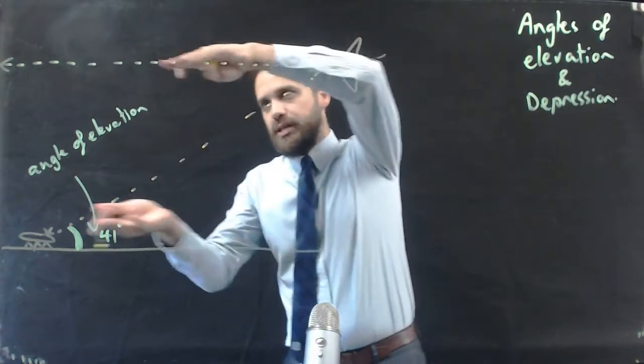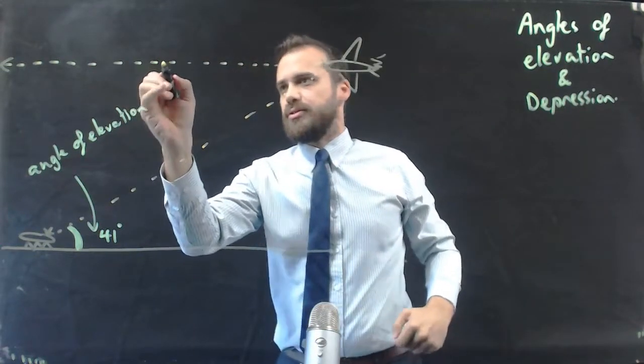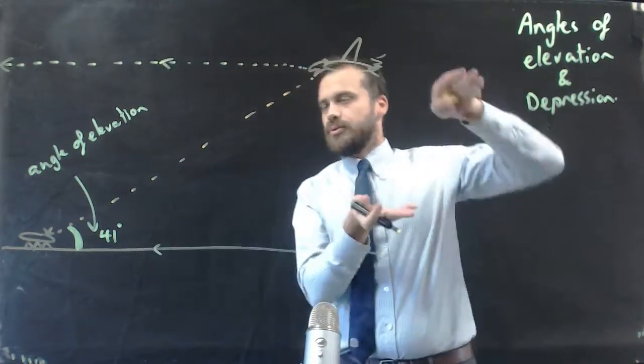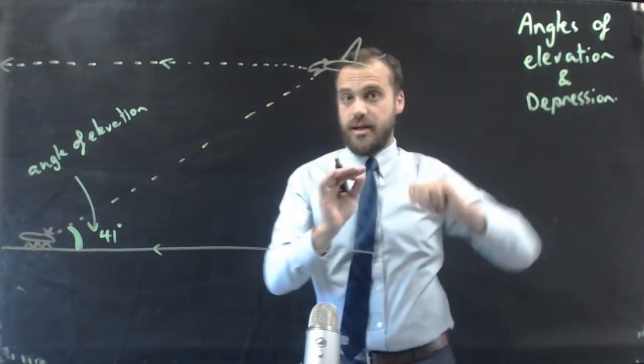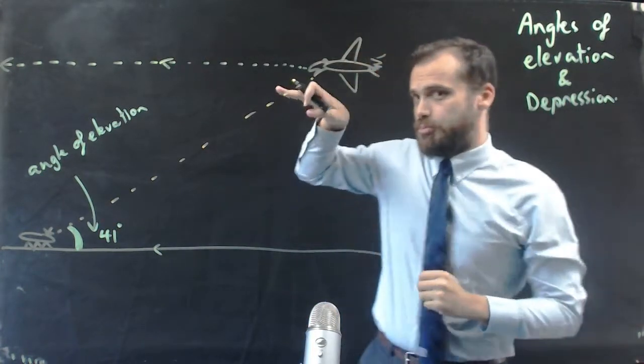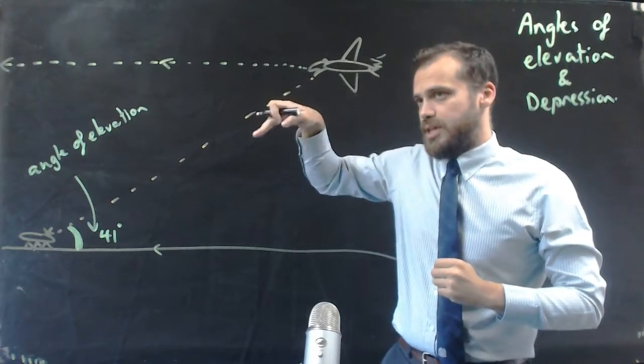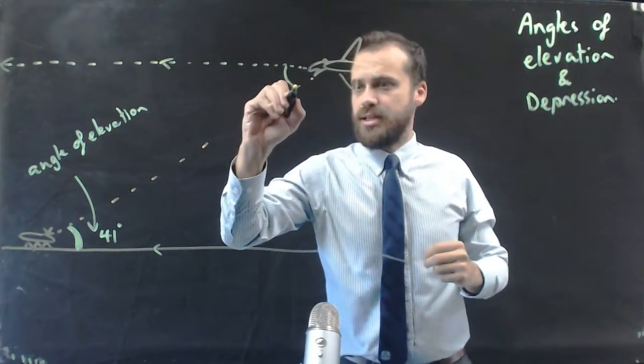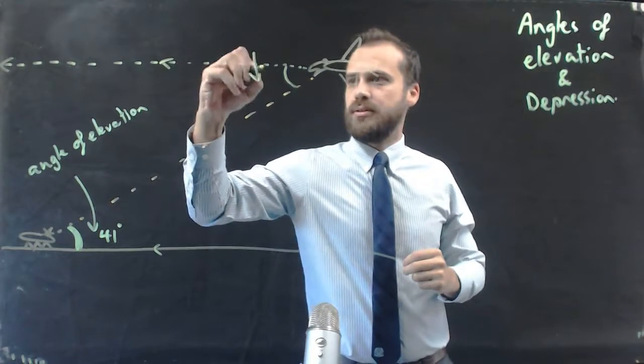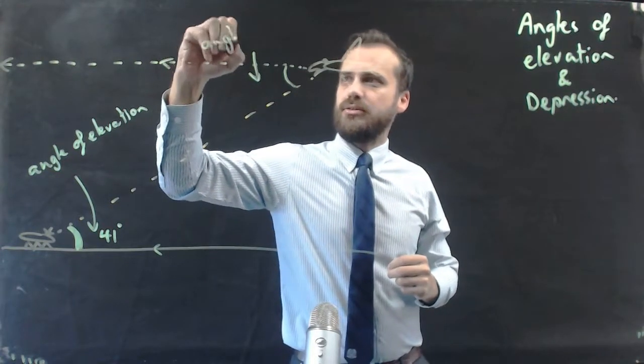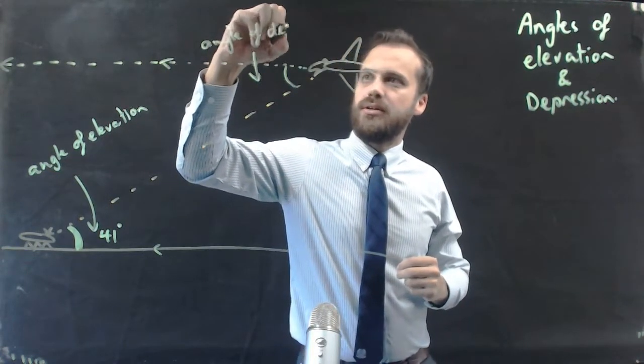What I've done is draw a line that's parallel to the ground. Now, the angle that the bird looks down towards the ant, and this angle here is called the angle of depression.